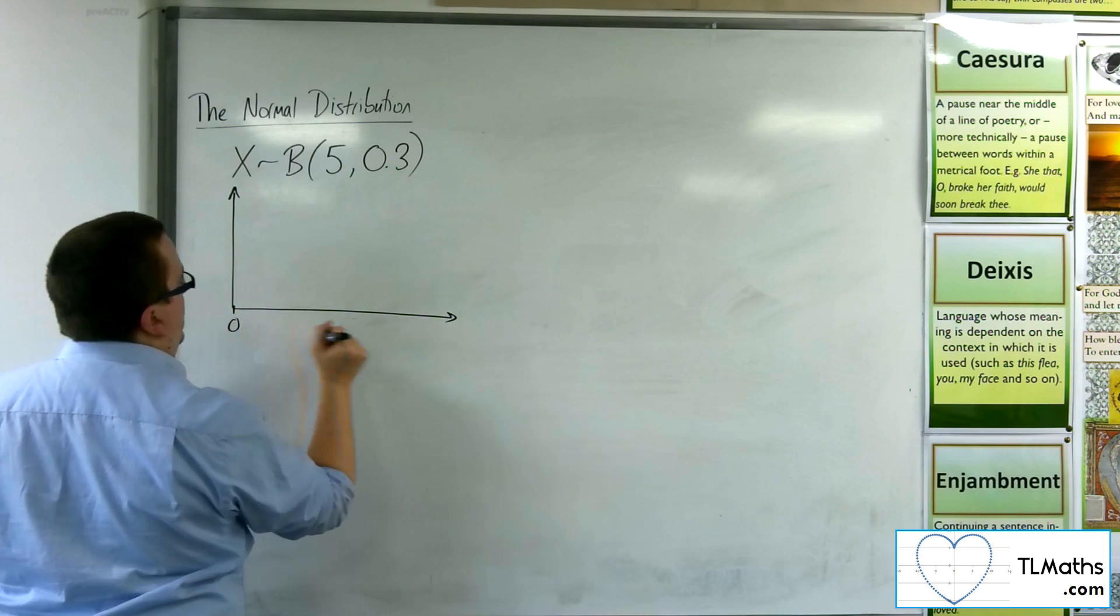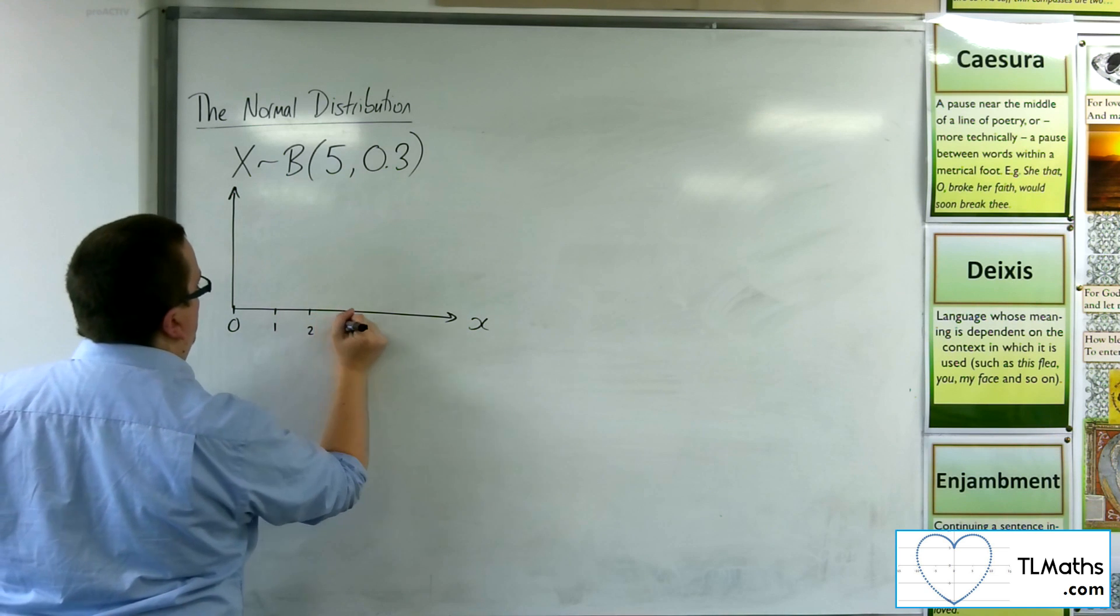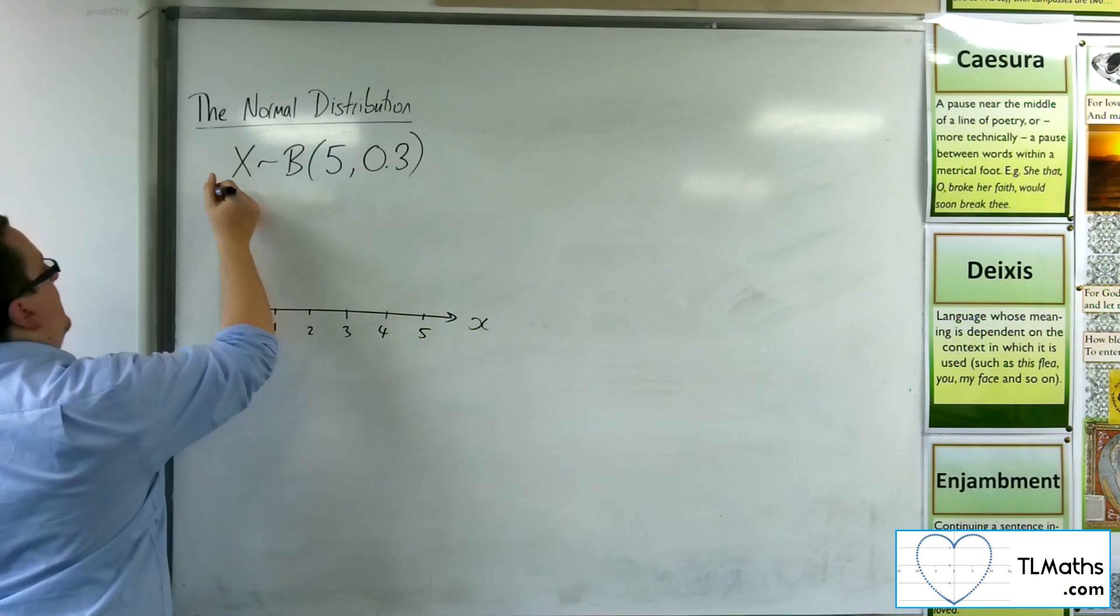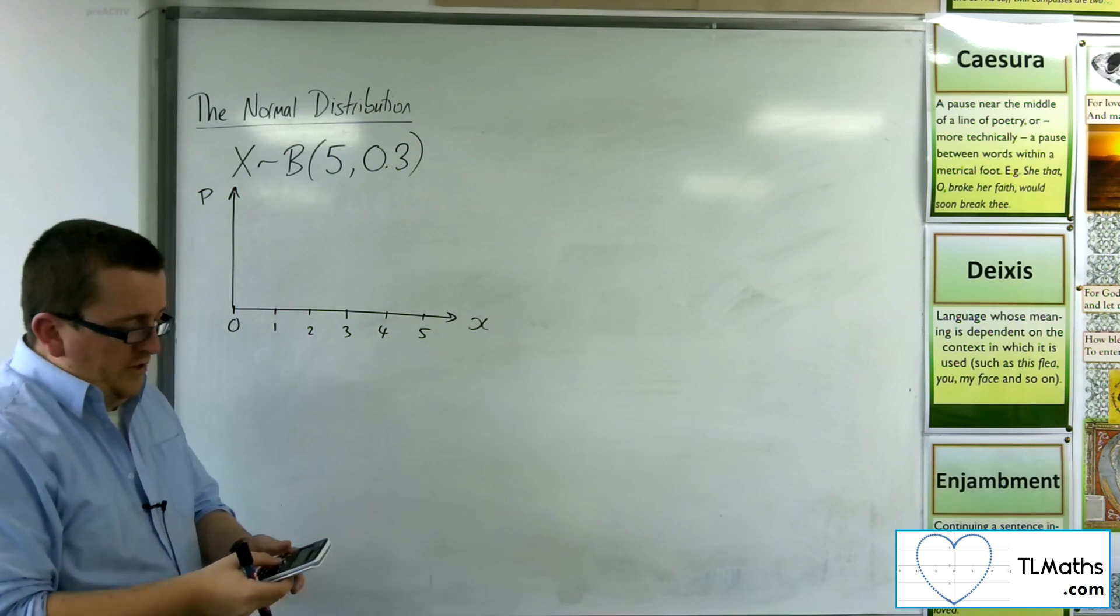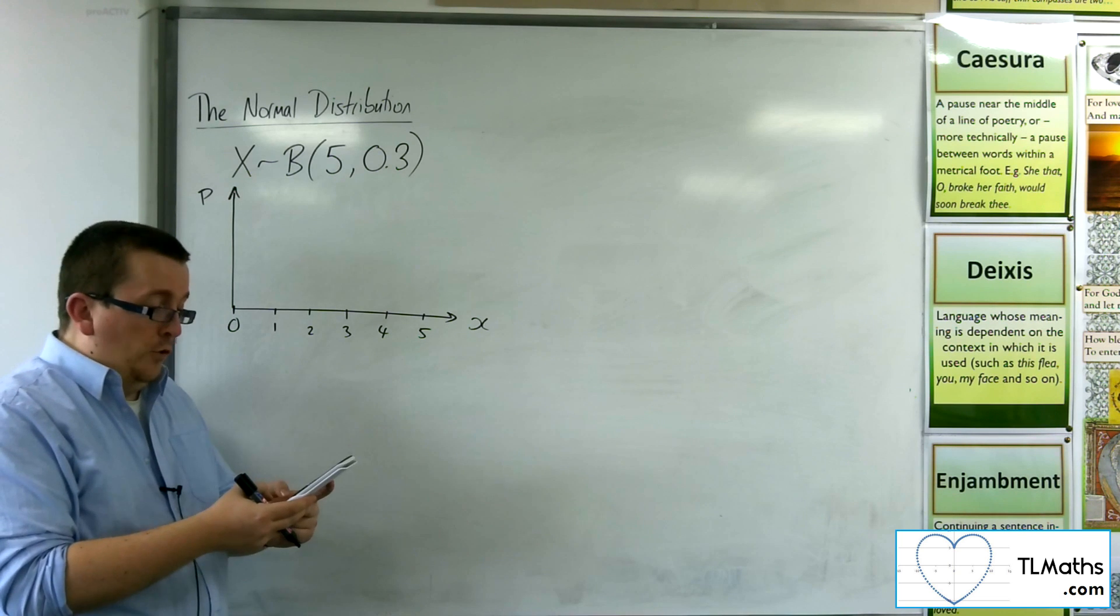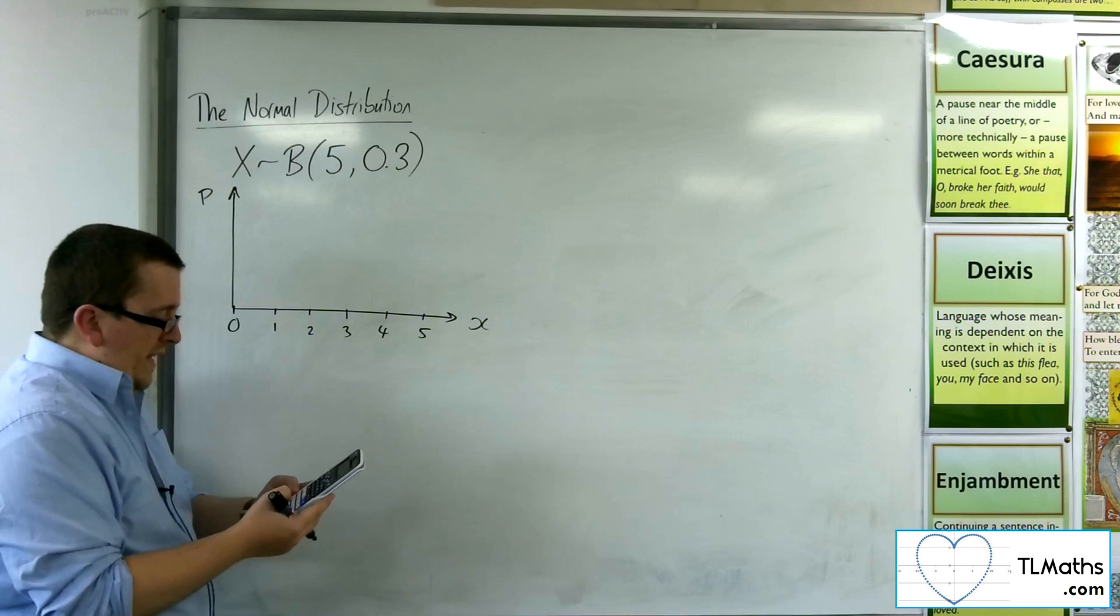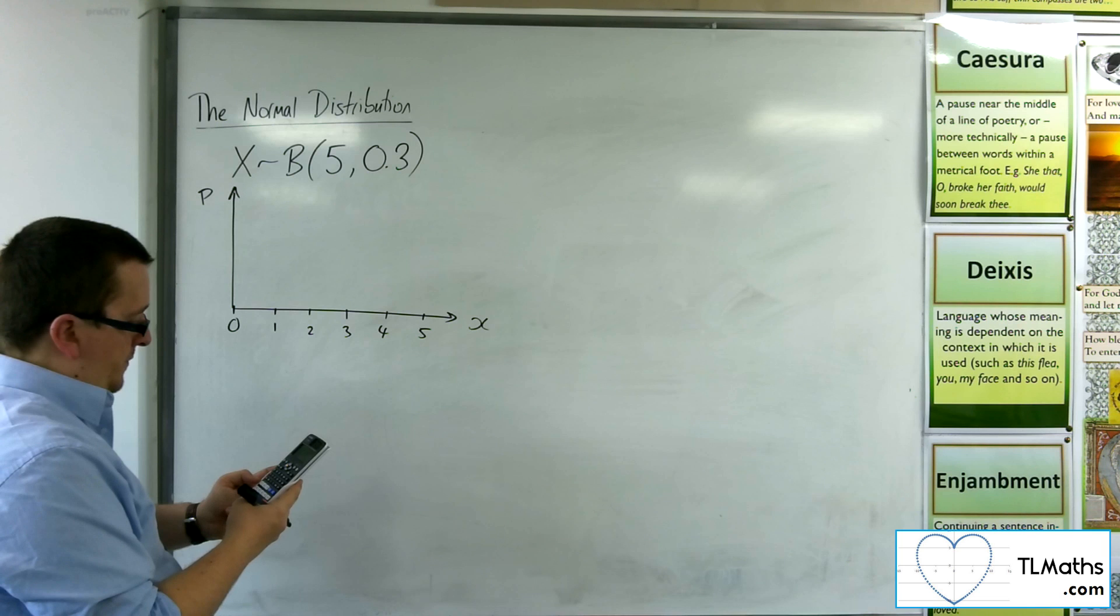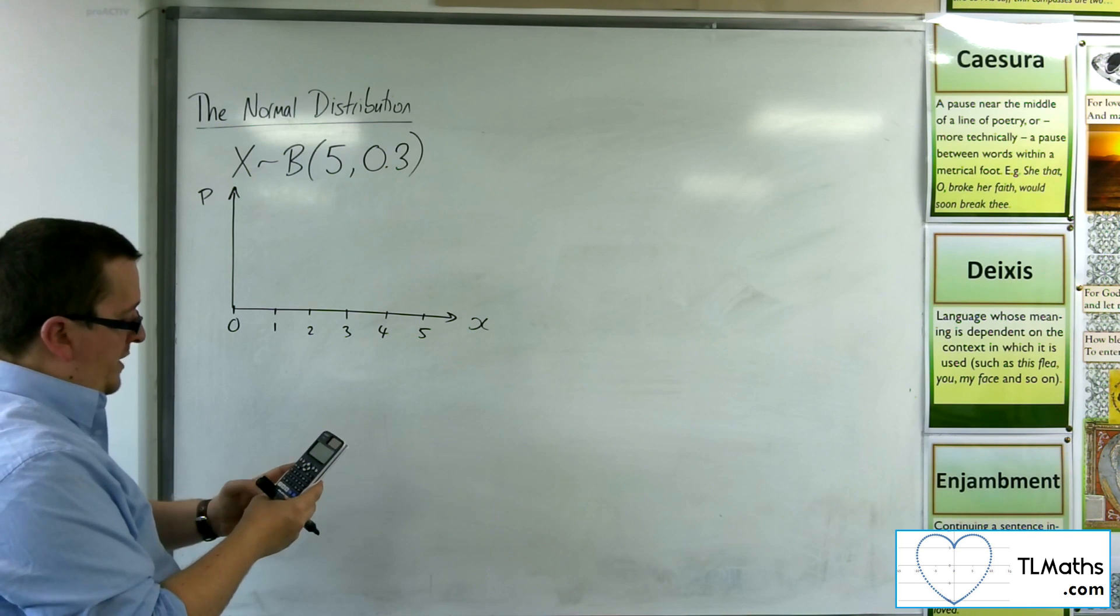So 0, these are the x values going on here. So 0, 1, 2, 3, 4, and 5. And up here, I would have the probability. So when I go into menu, and I go into number 7 for distribution, and I'm going to go into number 4 for binomial PD, I'm going to create a list with the x values in the table as 0, 1, 2, 3, 4, 5. And I press equals to get the n as 5, and the probability 0.3.